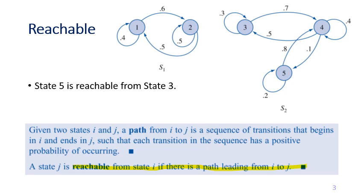A path is defined as a sequence of transitions that begins in i and ends in j, such that each transition in the sequence has a positive probability of occurring — in other words, each arrow has a probability that is not zero. Informally, if state 5 is reachable from state 3, it means there is at least one way to go from 3 to 5.